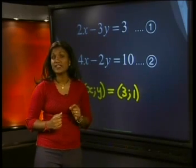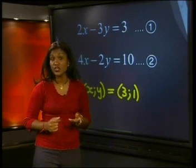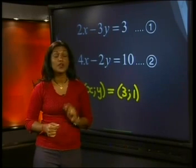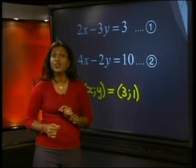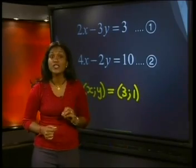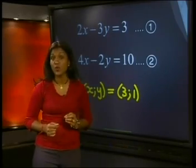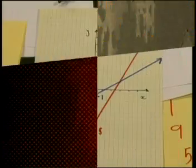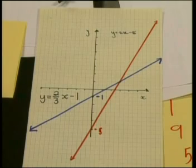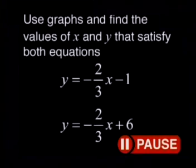If the point made at least one of the equations false, you would have to go back and redo the example. Remember, your graphs have to be accurate so that you can take a correct reading of the coordinates. We have seen that if the lines intersect, there is one point of intersection and one solution. Now let's look at another example.